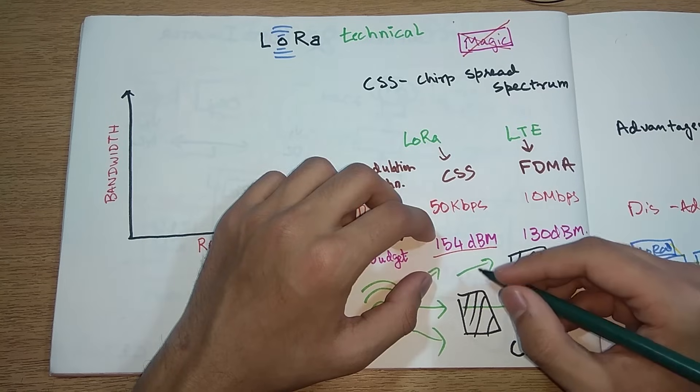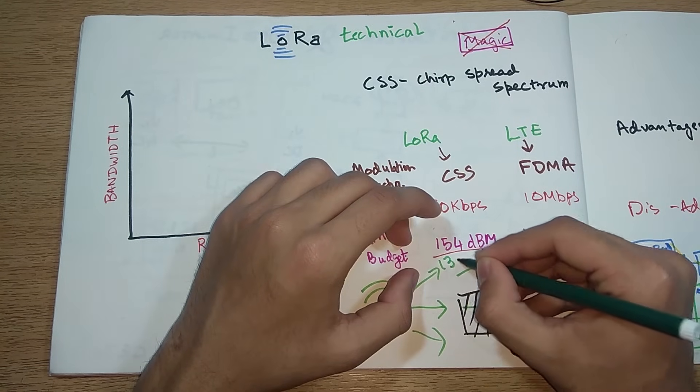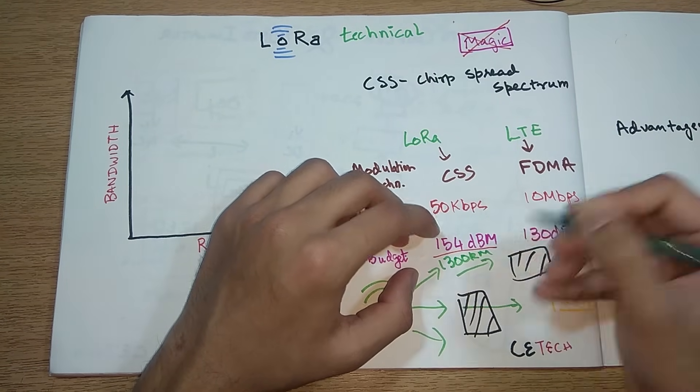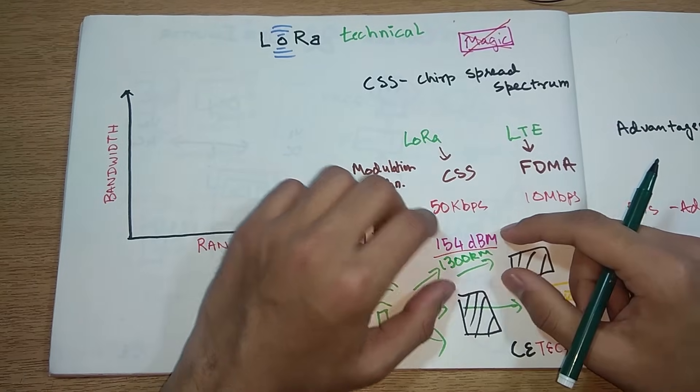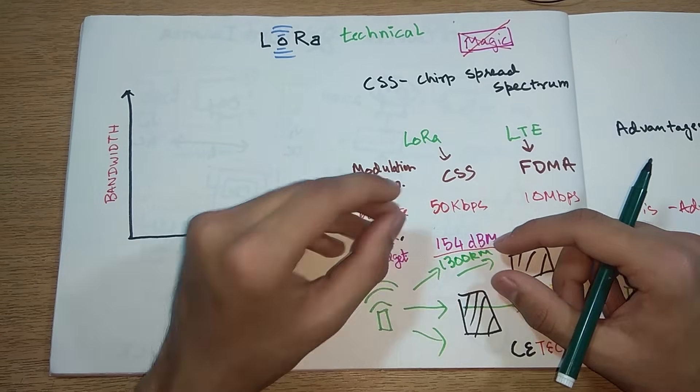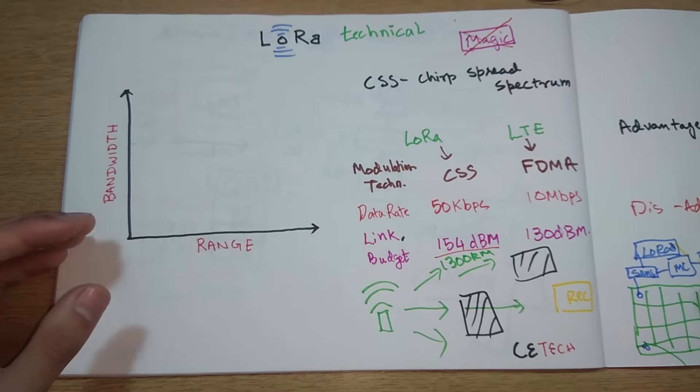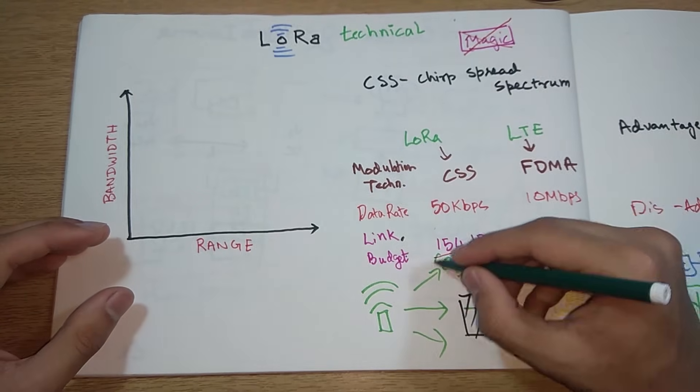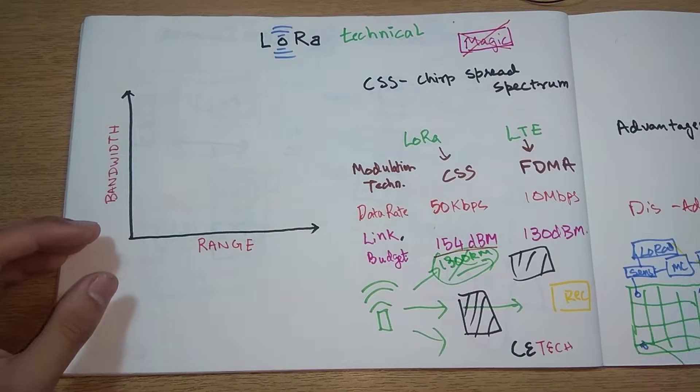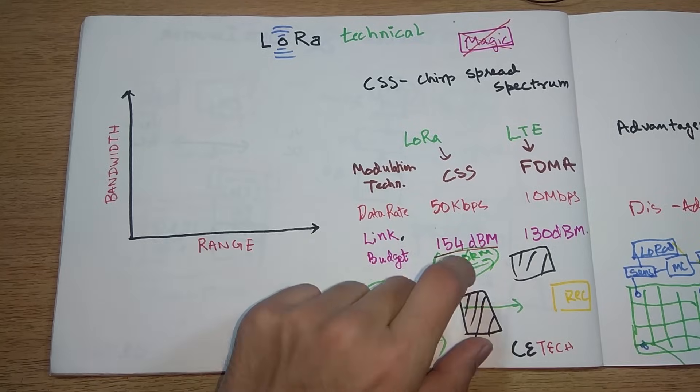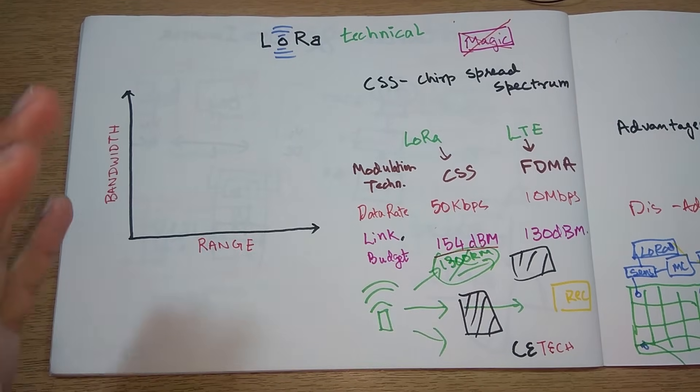With this link budget and taking ideal conditions, we can calculate range to be around 1300 kilometers. But as this is ideal case, there are many attenuations that happen in the wire that is used in transmission and there are blockages in between, so we do not get this range.